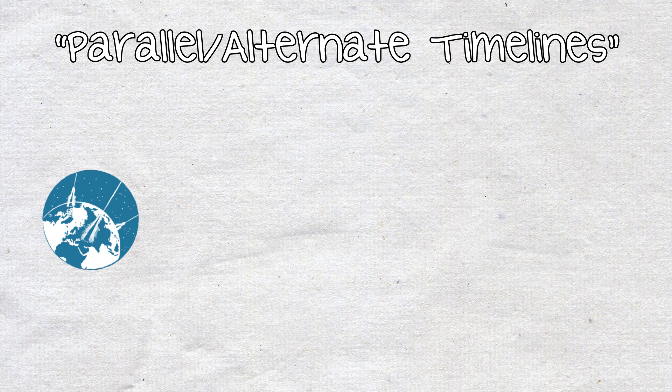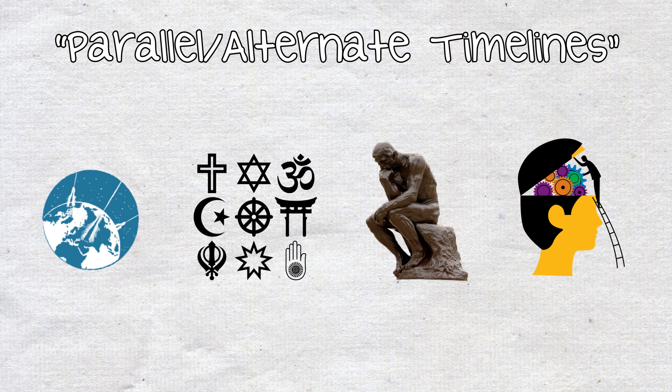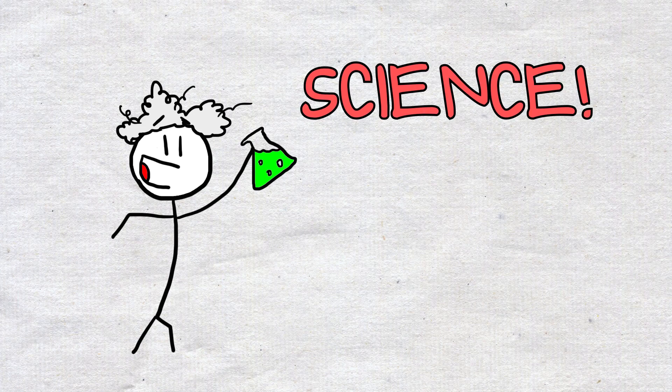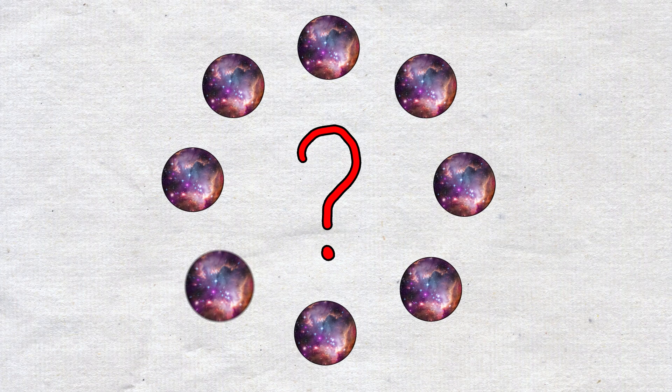For example, the idea of parallel or alternate timelines exists not only in physics and astronomy, but also cosmology, religion, philosophy, and psychology, not to mention science fiction and fantasy literature. But let's look at the scientific side of things. What kind of support is there for the theory of multiple universes?